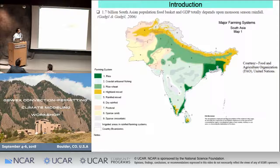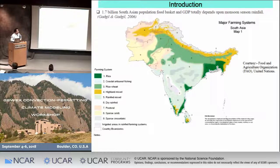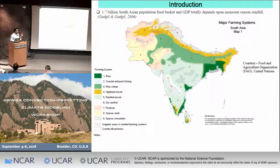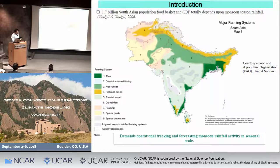This is related to the farming system based on the Food and Agricultural Organization of the United Nations. This region is highly cultivated for rice and wheat, with a lot of mixed crops grown in central India. I am showing this because the Indian summer monsoon is very much linked with the agricultural system and the GDP of South Asian countries, making operational tracking and forecasting of the monsoon very important.